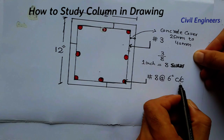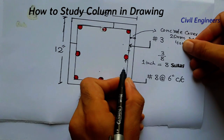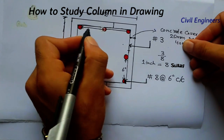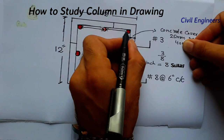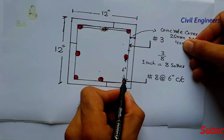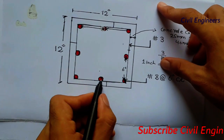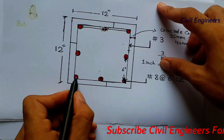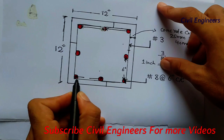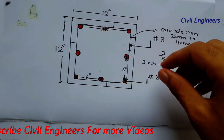The 6-inch center-to-center distance is between two bars. This is the center of one steel bar and this is the center of the other bar. From one center to the other is 6 inches. So the center-to-center spacing between the steel bars is 6 inches.